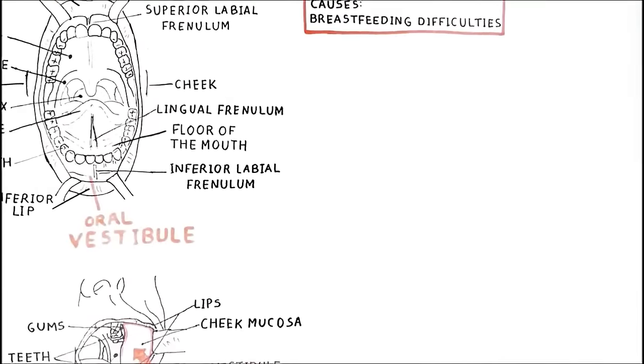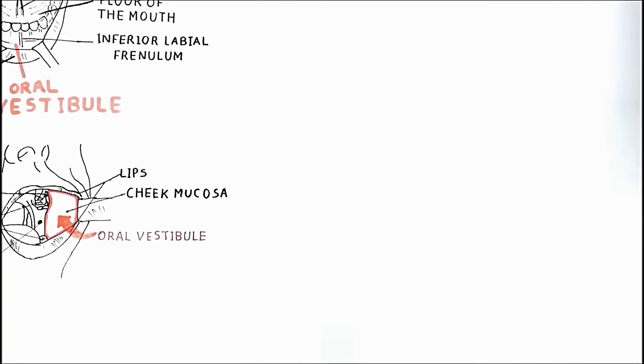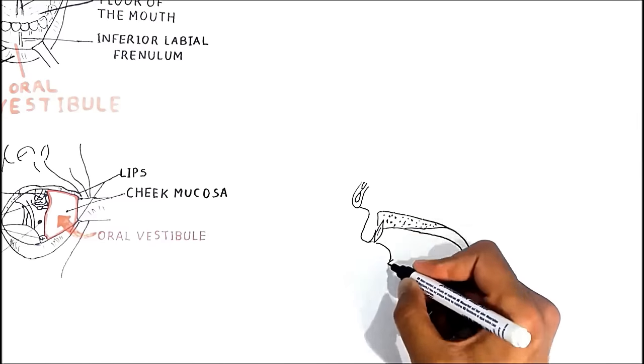As for the mouth proper, it lies posteriorly to the vestibule. In order to clearly show its relation with the vestibule, let me draw here another diagram from the side.